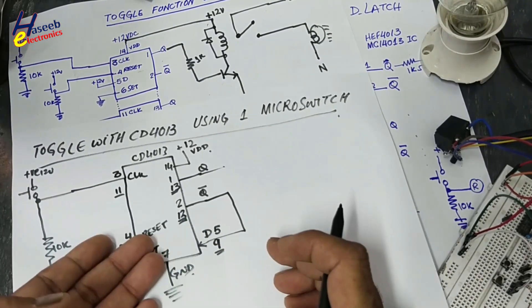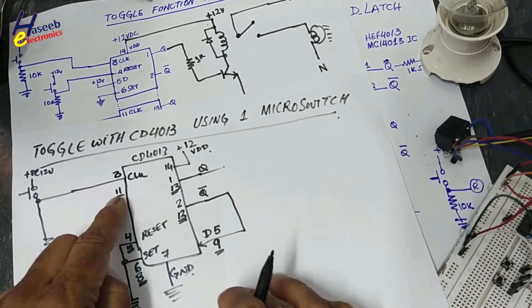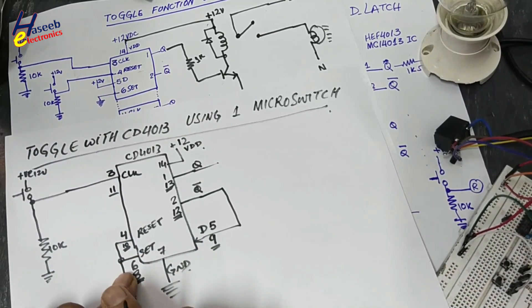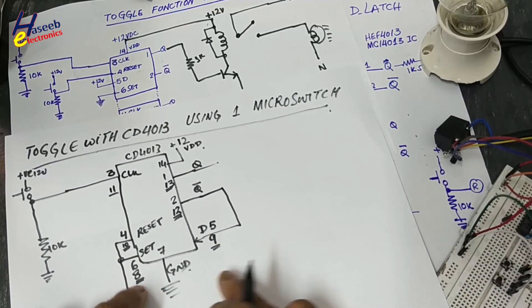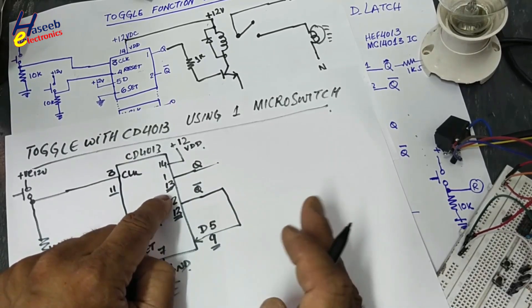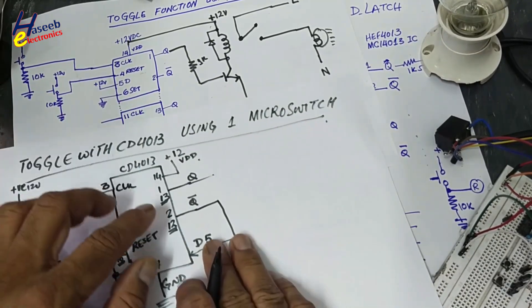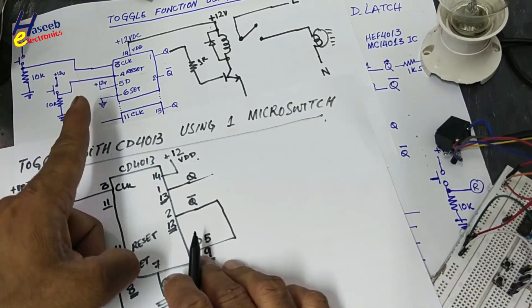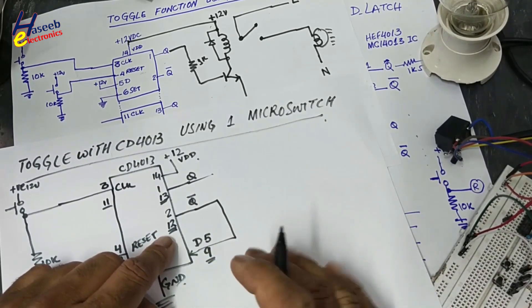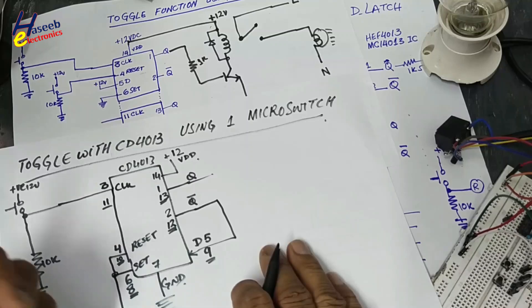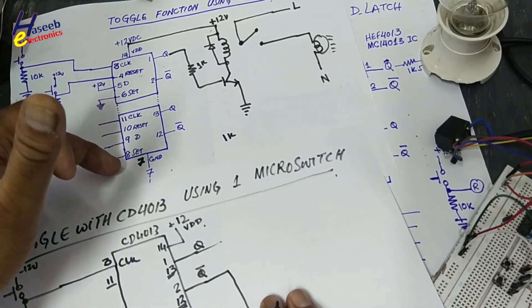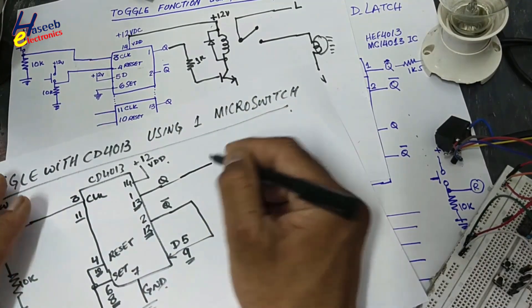Either we are connecting first channel - for first channel, pin 3. For second channel, pin 11. Here pin 4, first channel. Pin 10, second channel reset. Set pin 6, first channel. 8, second channel. Now it is our selection, either we are using this one or this one. If you are using second channel, pin 13 will Q output. If you are using first channel, pin 2 is Q bar. Pin 12 will Q bar for second channel. So I mentioned pin number for both channels.